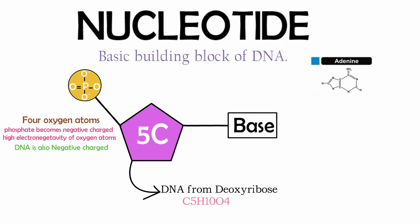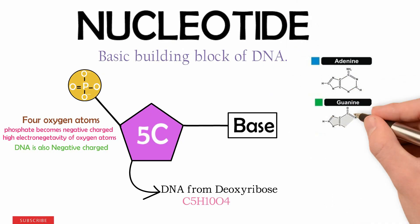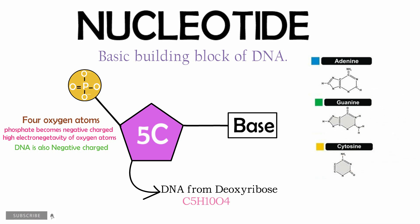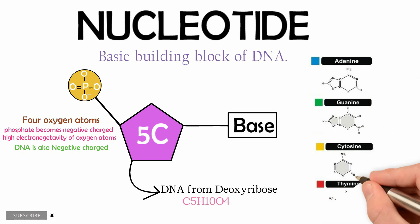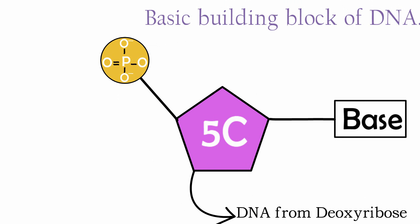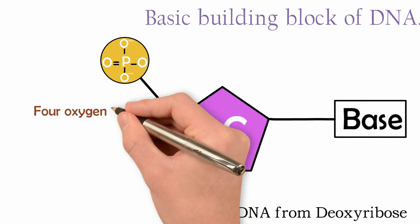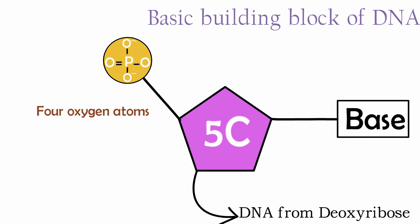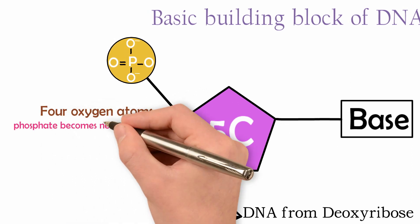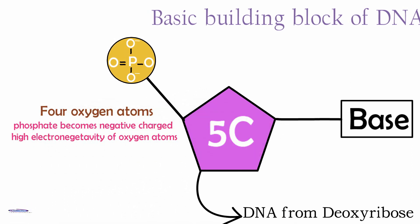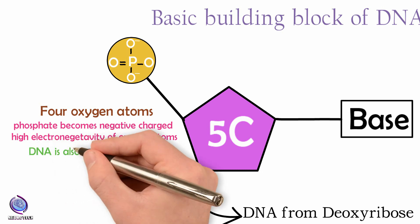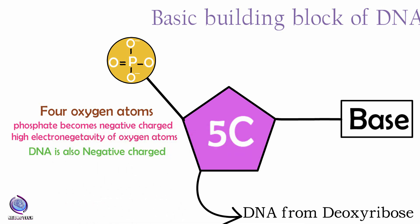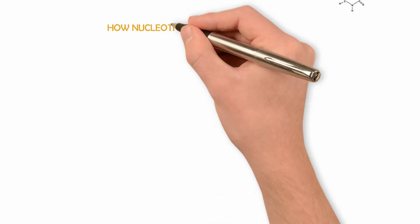There are four different nitrogenous bases: adenine, guanine, cytosine, and thymine. The third component of the nucleotide is the phosphate group, which is bonded with four oxygen atoms. Phosphate becomes negatively charged due to the high electronegativity of oxygen atoms; therefore, DNA also carries a negative charge.